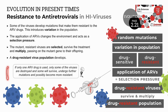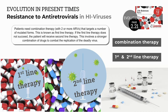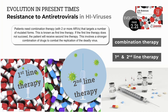If only one ARV drug is used, only some of the viruses are destroyed, others survive, and more mutations may occur making them possibly more resistant. So patients need a cocktail of drugs — combination therapy with two or more ARVs, each targeting different mutated forms. This is known as first-line therapy. If first-line therapy doesn't work, the patient gets second-line therapy involving a stronger combination of ARV drugs to block the replication of the HIV virus.